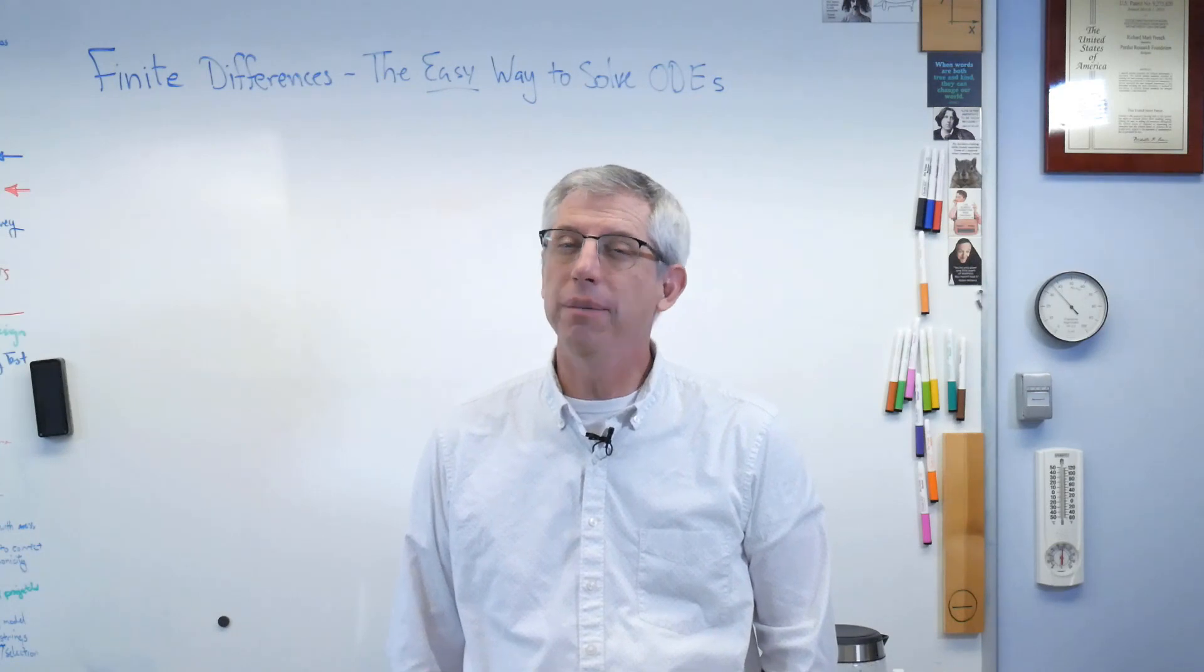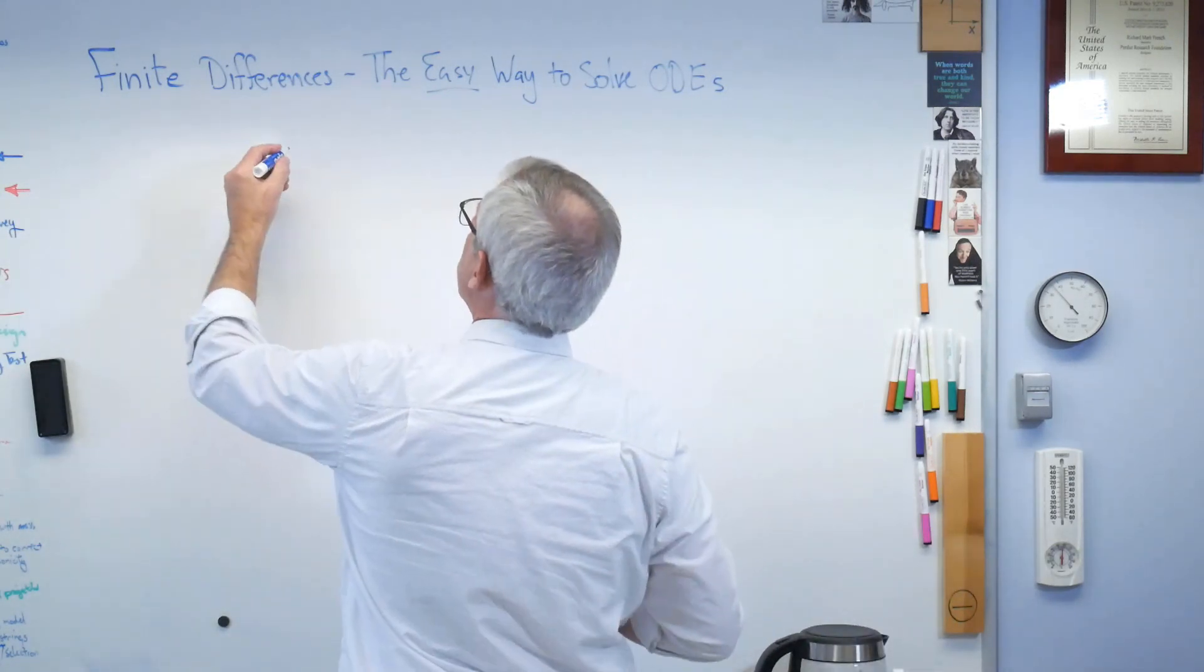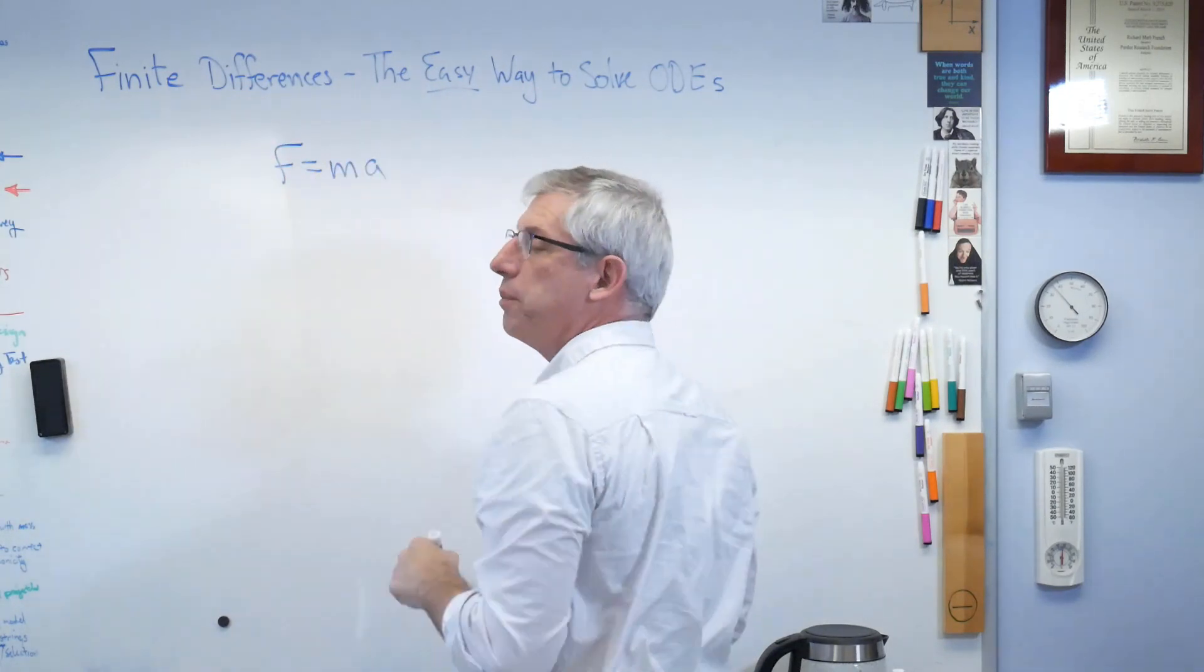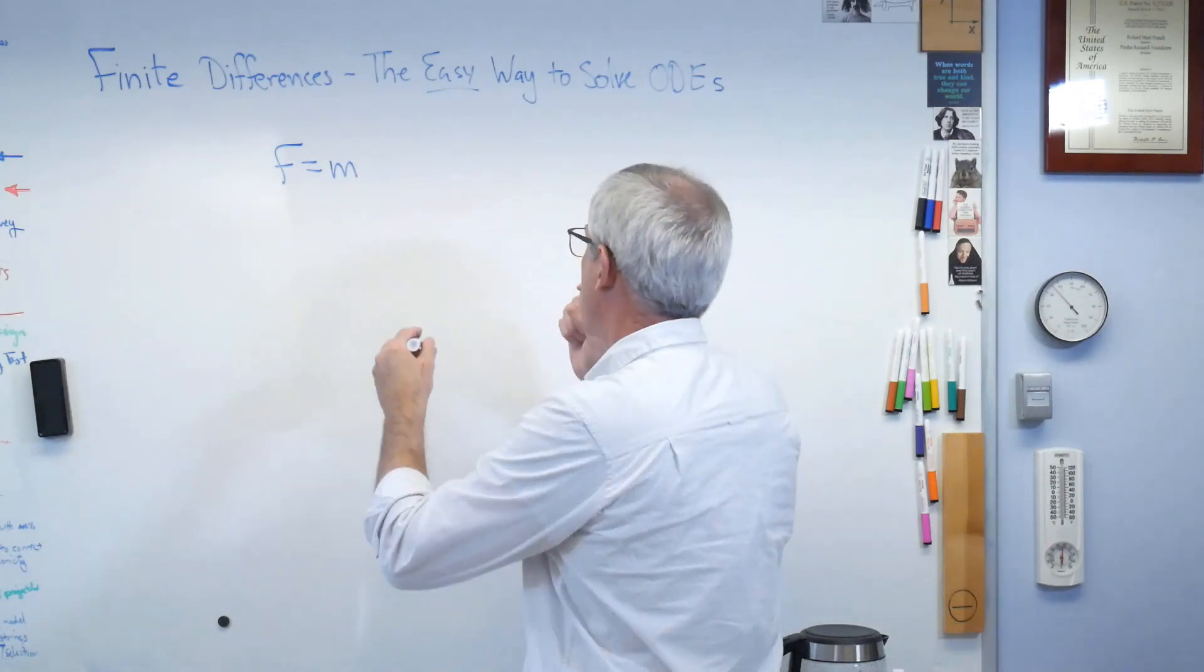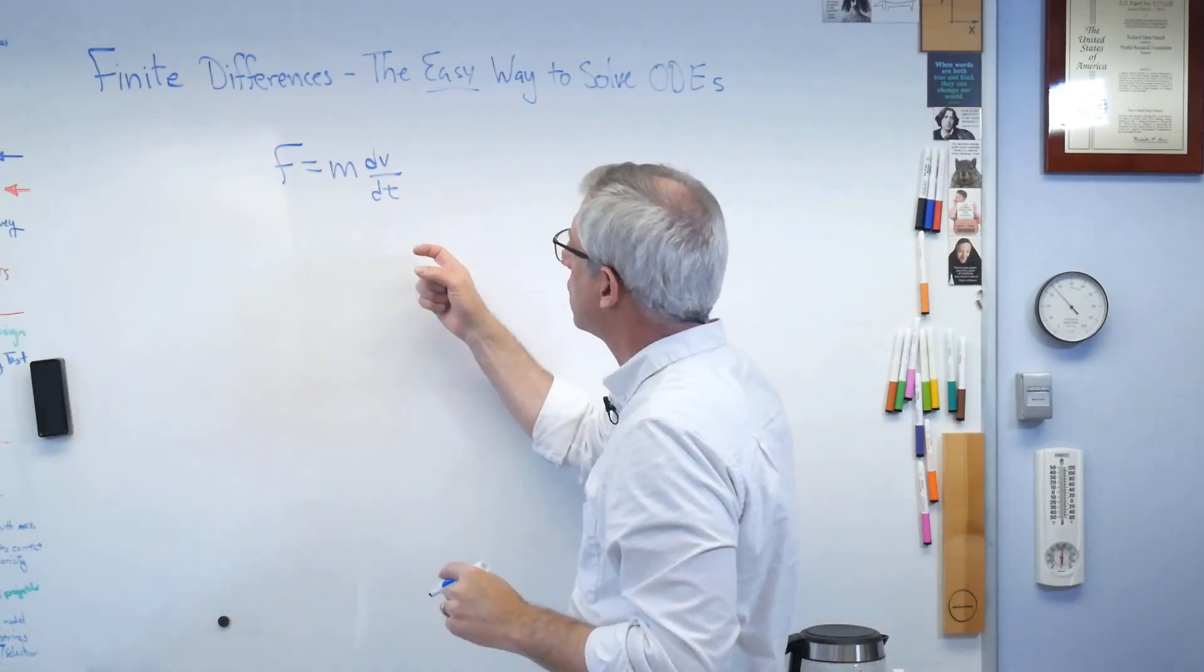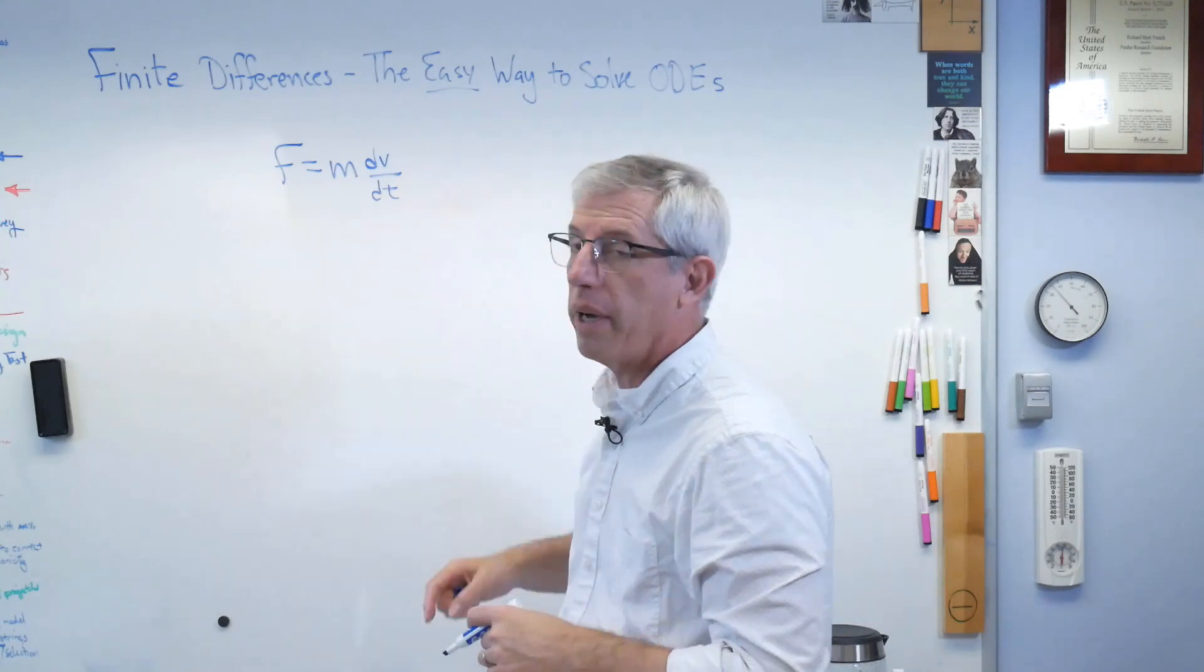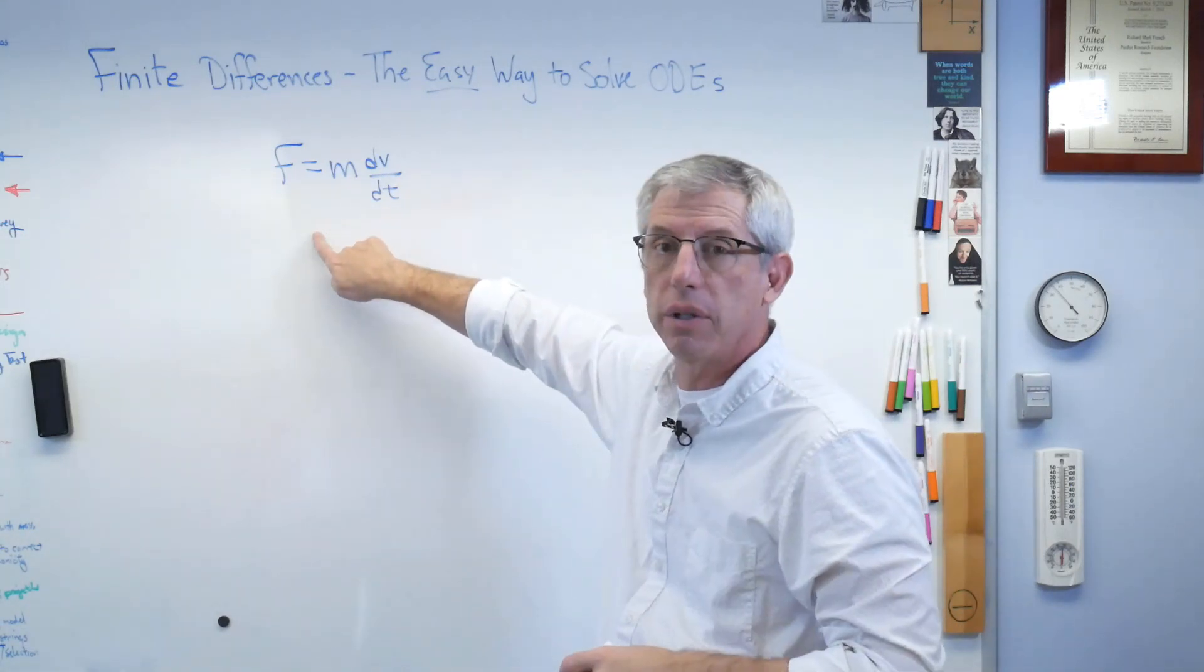So F equals MA, really a differential equation. Watch. We learned this in physics, probably, or some science class somewhere. Force equals mass times acceleration, right? Well, that's not really what Newton wrote. In fact, what he wrote was probably closer to this. He didn't use this notation, but that's pretty close. So force equals mass times the change in velocity over the change in time. Well, that's a slope. That makes this a differential equation.